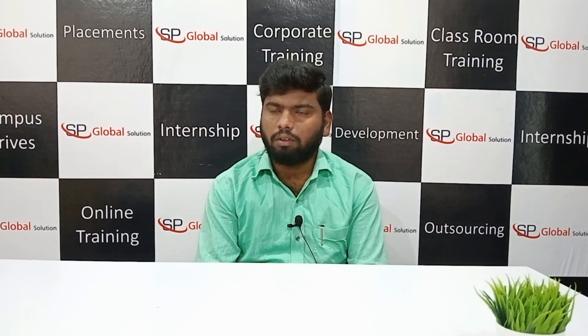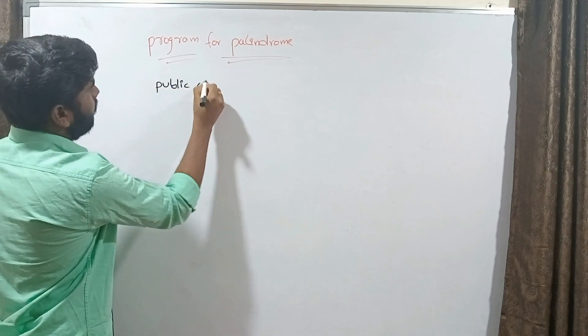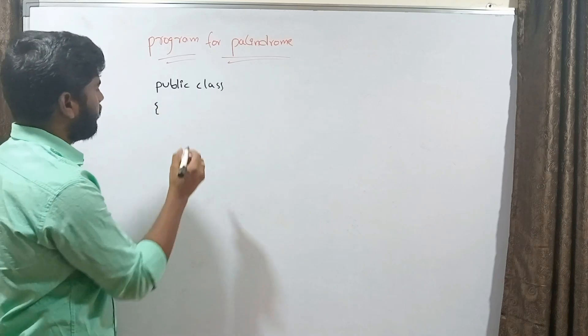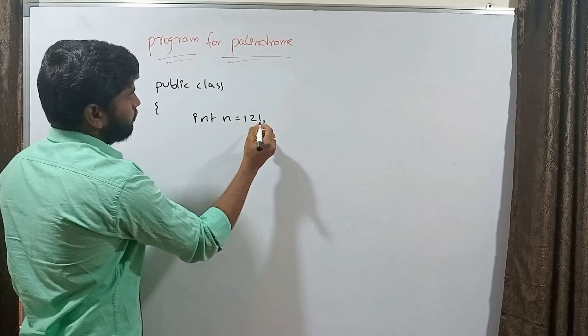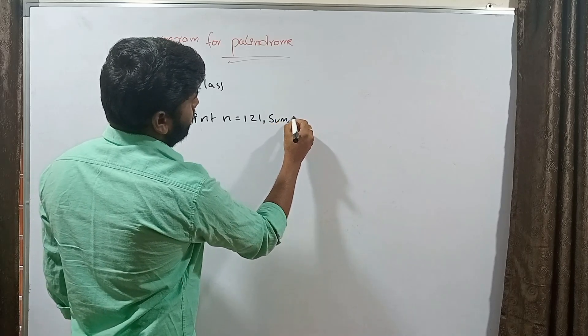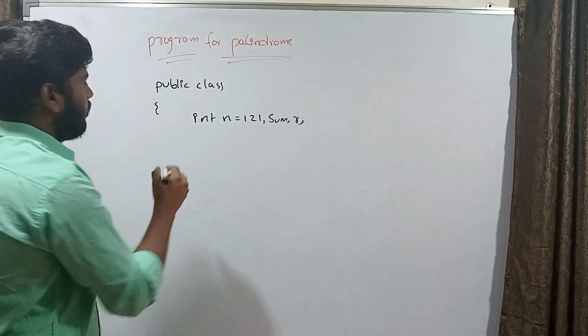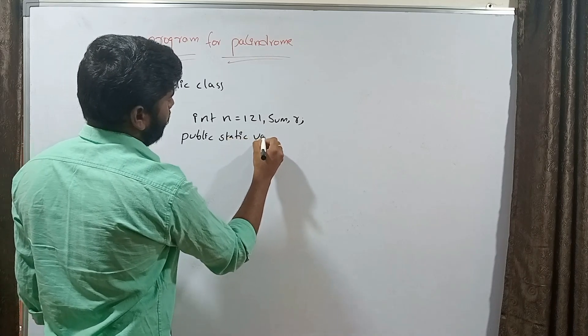Now the interviewer gives a coding task: write a program in Java to check if a number is a palindrome. The candidate begins: we take a class, public class, then declare some variables — int number equal to 121, a variable for remainder, and a variable to store the reverse.